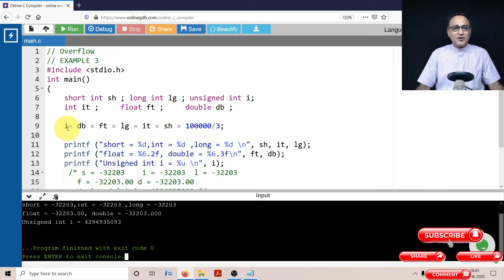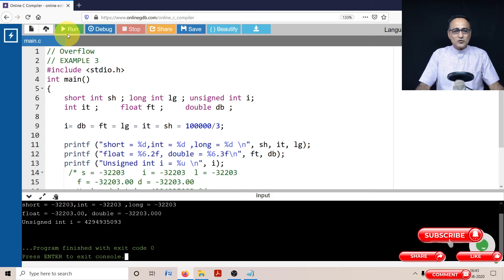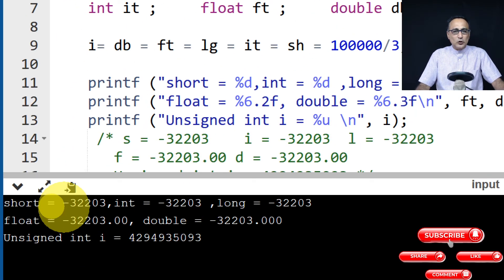So when you print the output, you're going to see what the unsigned int is going to really show. So let's try to run this and try to see what the output throws up for us. So once we compile this and we run it, this is how the output is going to look.